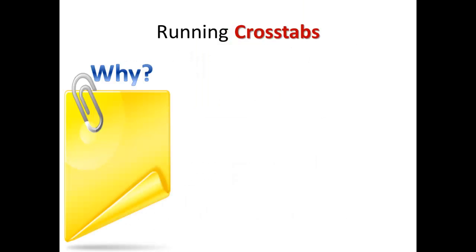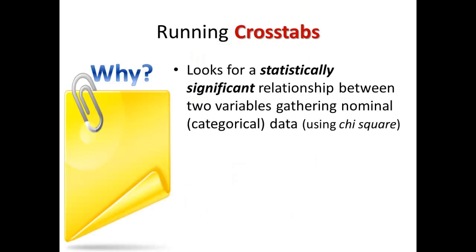You may be asking yourself why you might even run cross-tabulation analysis. Cross-tabulations look for a statistically significant relationship between two variables. Those variables are each gathering nominal or categorical level data. They use chi-square to determine whether the differences that you observe might be statistically significant — that is, not likely due to chance or sampling error.